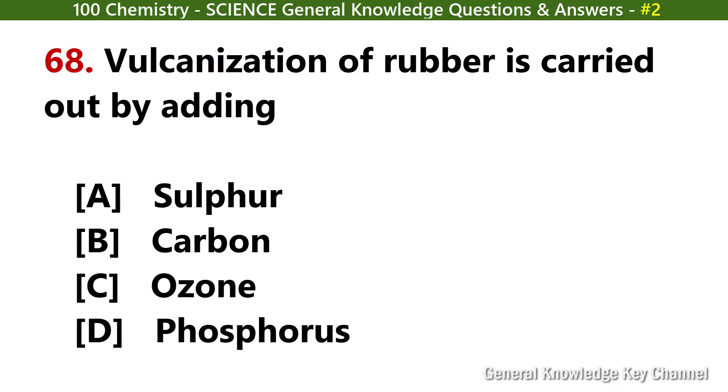Vulcanization of rubber is carried out by adding? Answer A: Sulphur.